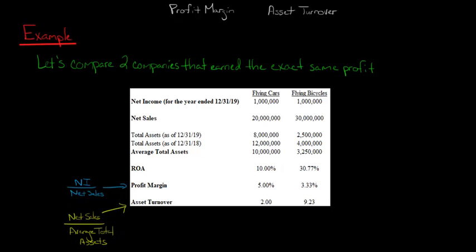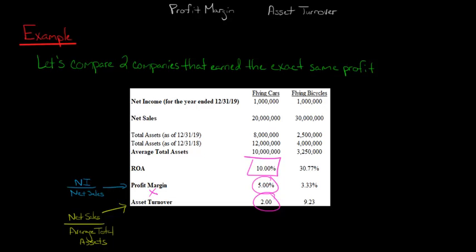If you want to check your work, you can multiply profit margin times asset turnover to get ROA. For flying cars: 5% profit margin times 2 asset turnover equals 10% ROA. For flying bicycles: 3.33% profit margin times 9.23 asset turnover gives approximately 30.77% ROA after rounding. So we can calculate ROA as net income divided by average total assets, or break it into its components of profit margin and asset turnover.